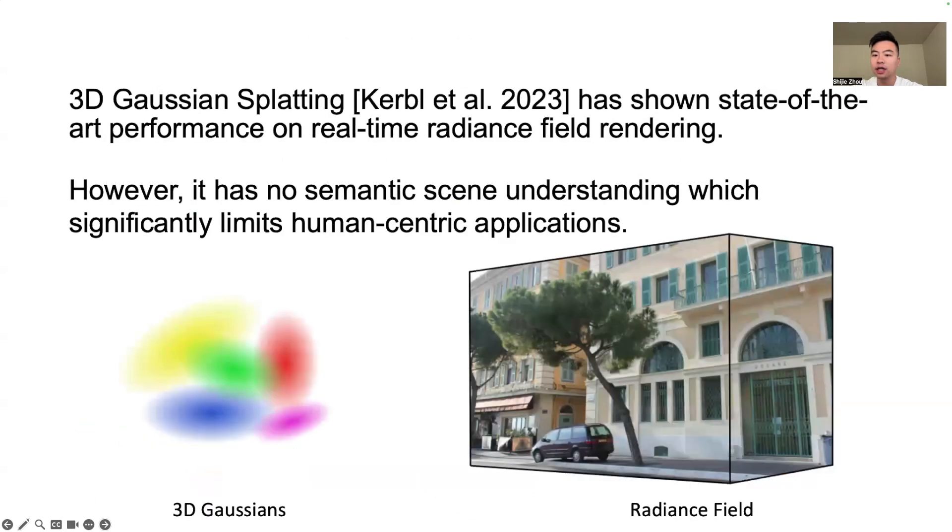3D Gaussian Splatting has shown state-of-the-art performance on real-time radiance field rendering. However, 3D Gauss, as well as NeRF, is only scene representation but no semantic understanding of the scene, which significantly limits human-centric applications. For example, the model has no idea about the scene consists of a car, a tree, and a building.